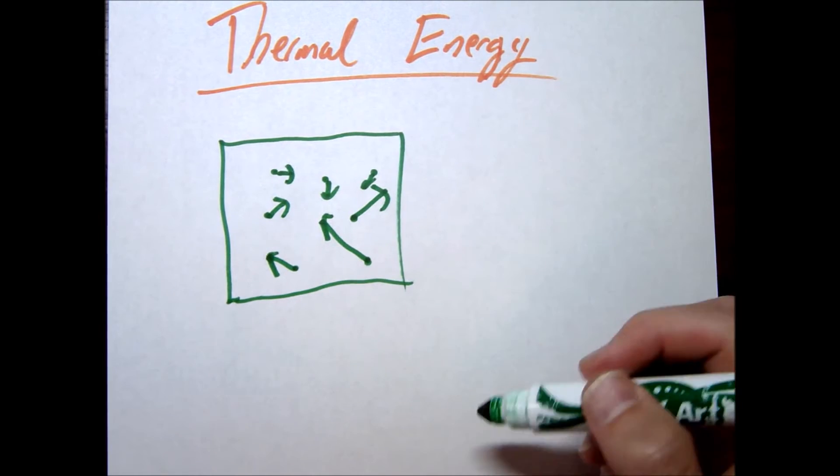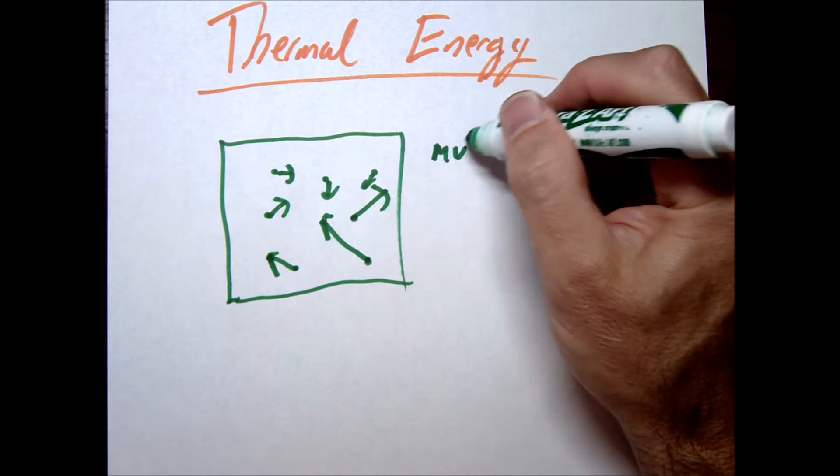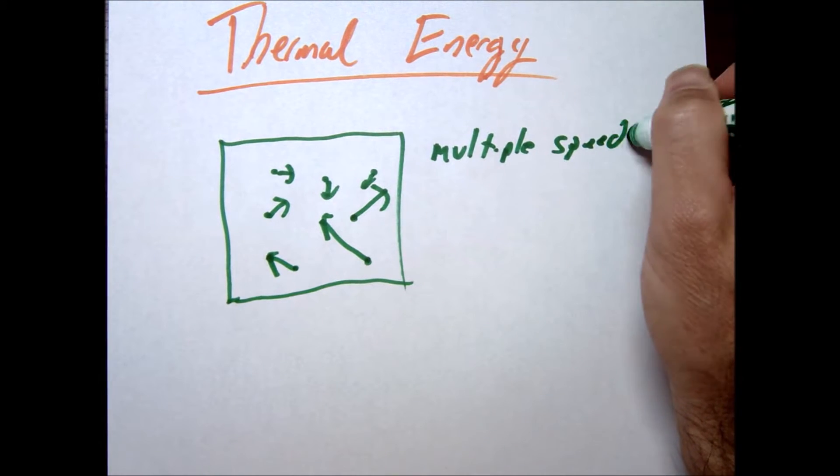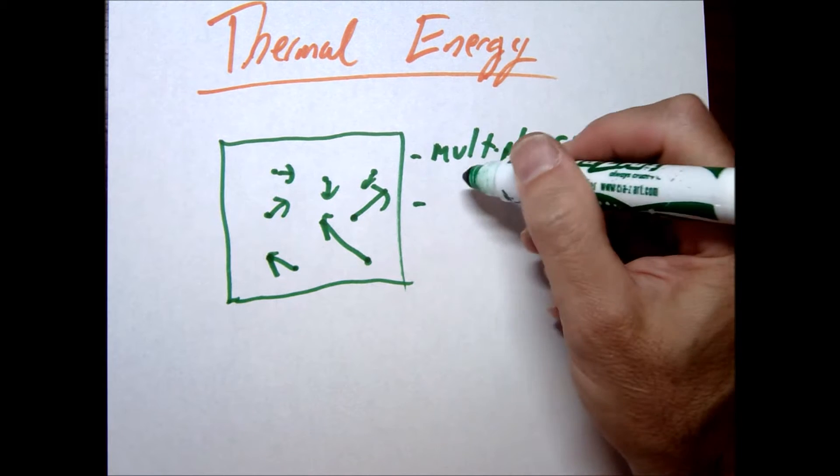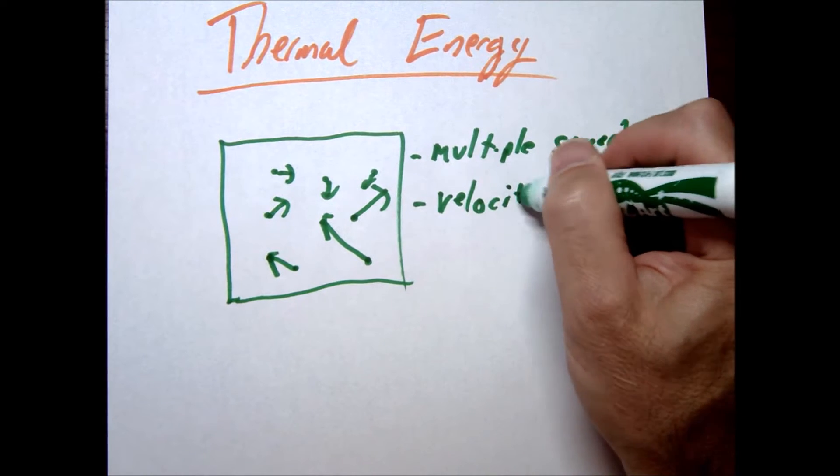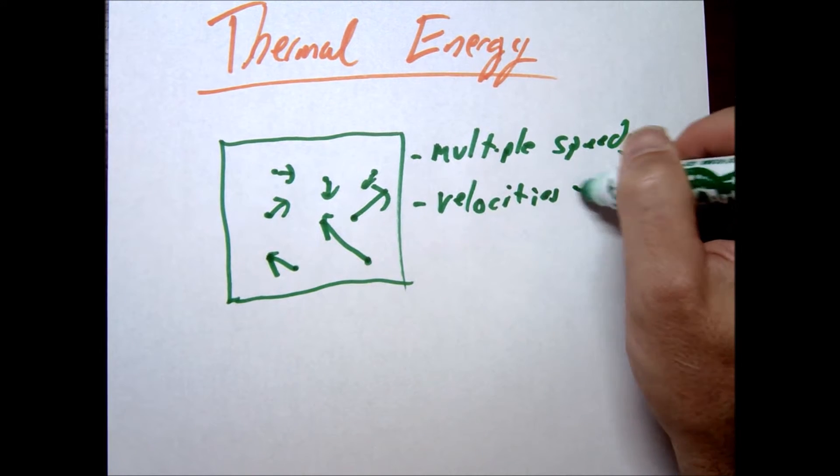They'll be colliding with each other, some will be speeding up, some will be slowing down, but they're all going to have multiple speeds. Well the fact that they do have speeds means they have kinetic energy. Since they do have velocities then they must have kinetic energies as well.